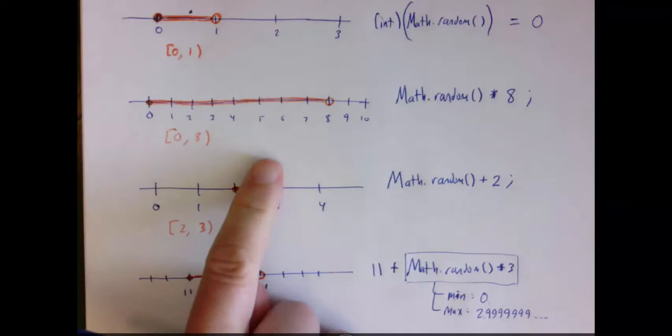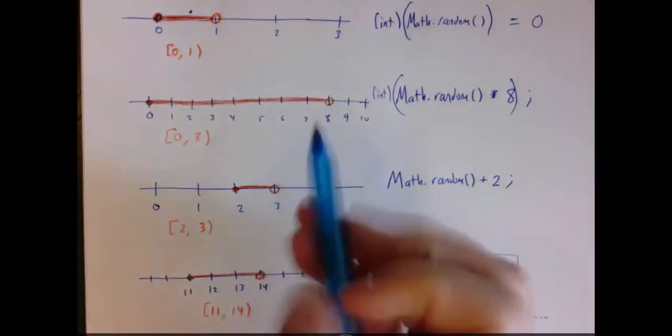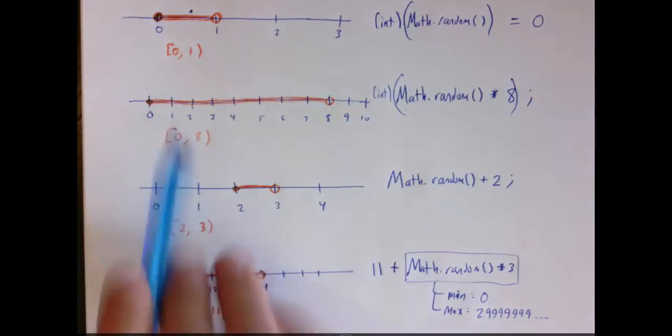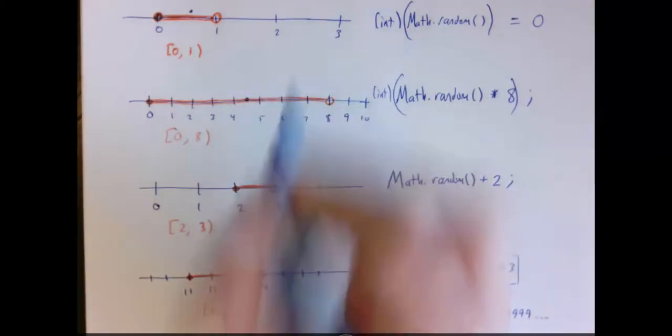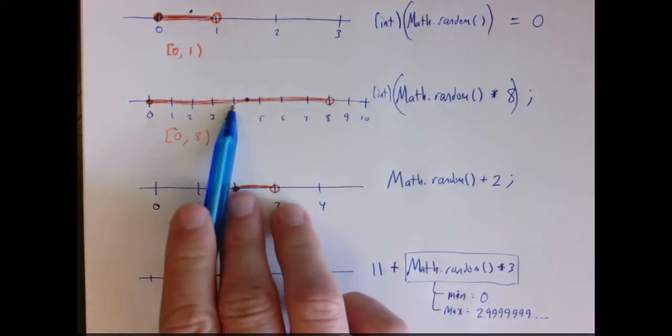In this example, however, if I were to multiply by 8 first, and then cast to int, it would be, you can imagine it like rounding down. So if I generate a random number here, 4.something, and then I cast to int, that would give me the integer 4.